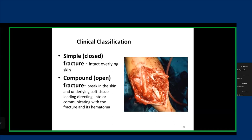An open fracture is infected by definition — so we treat open fractures as an infection site by definition. A fracture that has opened into a body cavity, whether the bladder, uterus, vagina, or bowels, all count as open fractures. Please remember this definition.